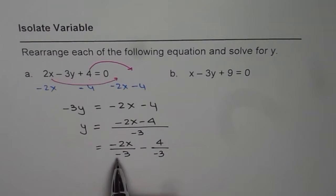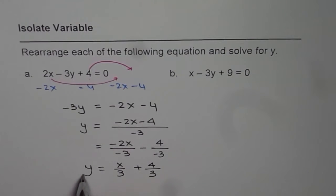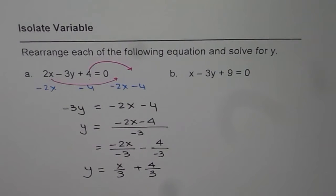Now minus times minus, or minus divided by minus is positive. So we get x over 3 here, and here minus times minus makes it plus, so we get plus 4 over 3. So that is how we can isolate. So y equals to x over 3 plus 4 over 3. That's one way of doing this.